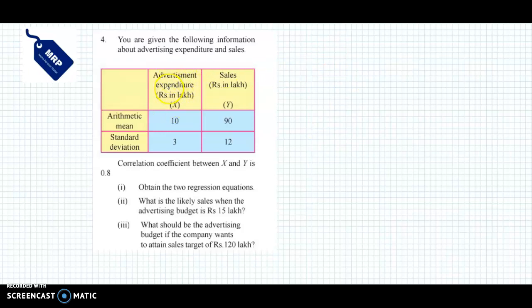Now x denotes advertisement expenditure. x̄, that means x bar, the value is 10. Then standard deviation of x is 3, that is σx = 3. Then sales mean value ȳ, y bar is 90. And standard deviation is given as 12, that is σy = 12. And below the table is given correlation coefficient between x and y, that is r = 0.8.